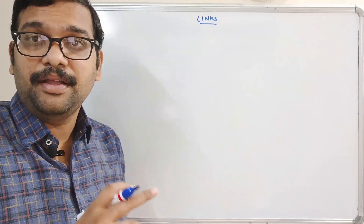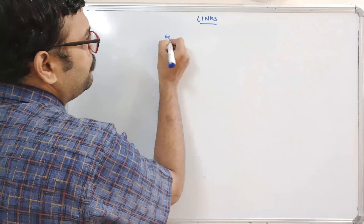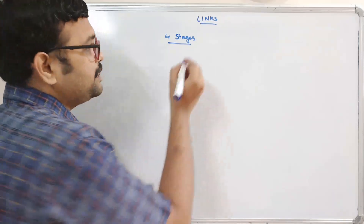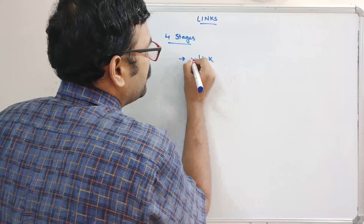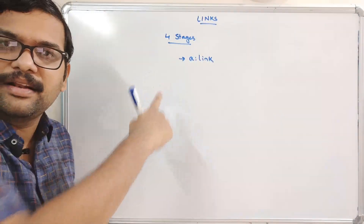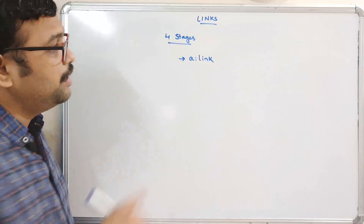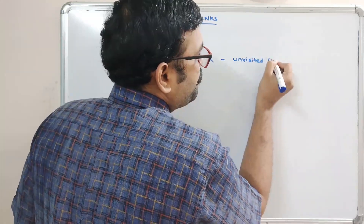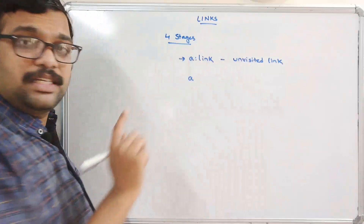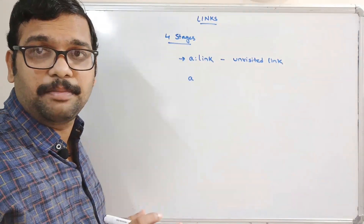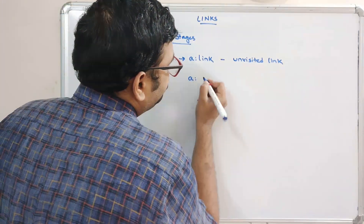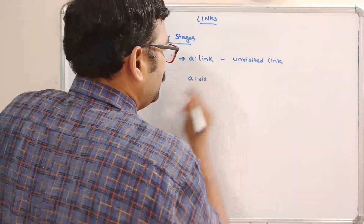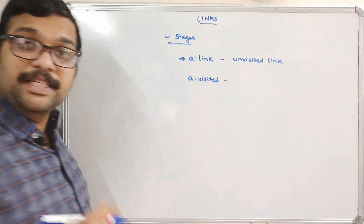These links will be executed in four different stages, and we can apply CSS in all four stages. The first stage is a normal link — we represent it as 'a:link'. Here 'a' represents the anchor tag. 'a:link' is nothing but an unvisited link — a link that we have created but not yet visited.